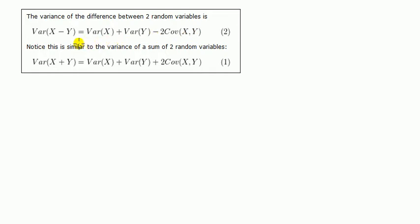Now notice how similar this is to an earlier result we've seen: the variance of a sum of two random variables, which is the variance of x plus variance of y plus two times the covariance of x and y.